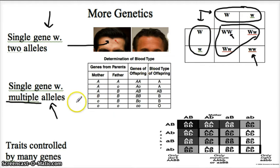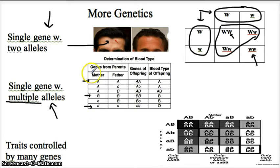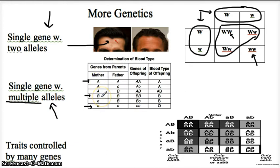The example here is blood type. You have the blood type potential of either A, B, O, or something called AB. This is more than two alleles — you've got several possible blood types. A and B are dominant, while O is recessive. So if you have a mother and a father that are both A, the child is going to be A.